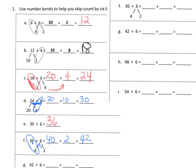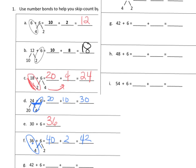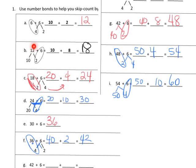Now for forty-two plus six: decompose to forty and two; six and two is eight, forty plus eight is forty-eight. Then forty-eight plus six: decompose six into two and four, so forty-eight plus two gives us fifty, plus four extra is fifty-four. Then fifty-four plus six: decompose to fifty and four; six and four is ten, plus the original fifty gives us sixty. The idea is to use number bonds to make repeatedly adding by six go quicker.